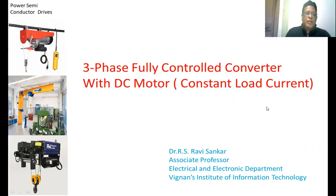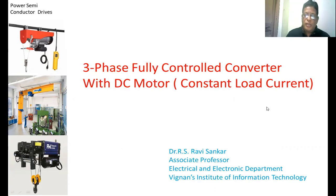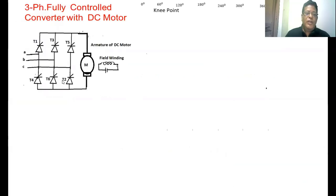Welcome back to the class. In this lecture, we are going to discuss about the operation of a three-phase fully controlled converter with a DC motor. Here we are assuming that the load current is a constant load current. This is the circuit diagram of the three-phase fully controlled converter.